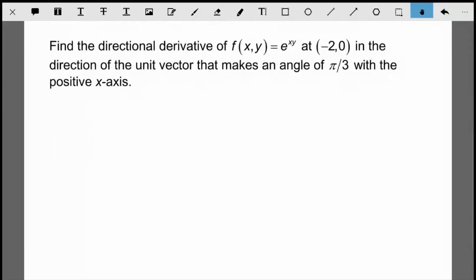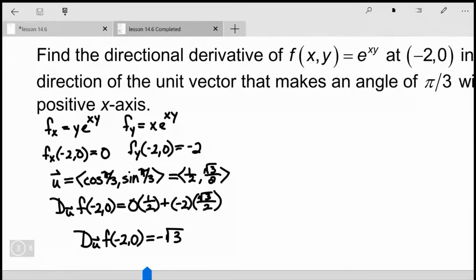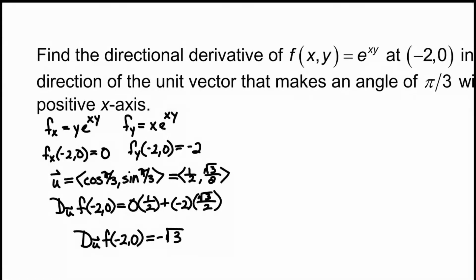Here's another example: find the directional derivative of this function at the point (-2, 0) in the direction of the unit vector that makes an angle of π/3 with the positive x-axis. Pause the video, take a minute or two, and solve through that question. The answer is that the directional derivative in the direction of vector u at (-2, 0) is negative square root of 3.